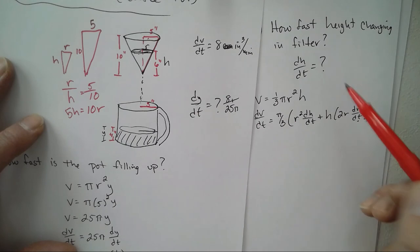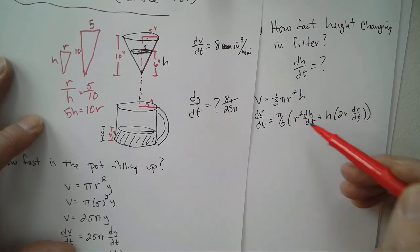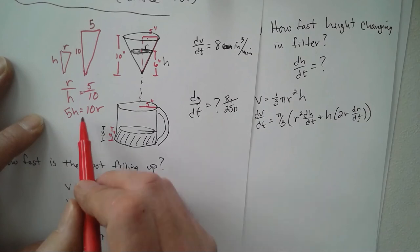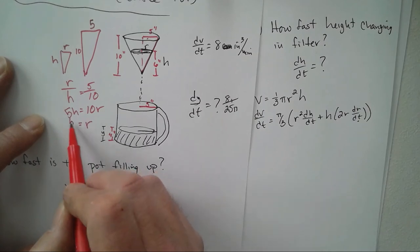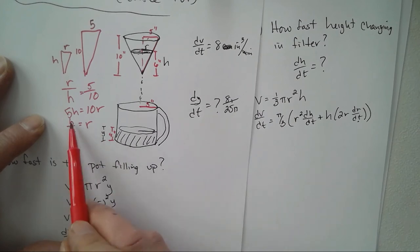So 5h equals 10r. Now we are looking for dh/dt, so we need h in our problem, we need it in our equation, we need h. So we need to eliminate r, so I need to solve for r. Divide by 10, so it would be h over 2. So now r is h over 2 in this problem.